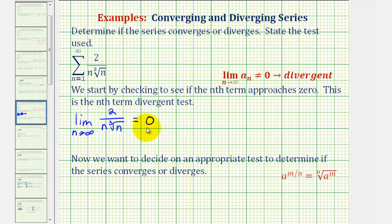When this limit is equal to zero, the nth term divergent test doesn't tell us anything. Let's go ahead and state that the nth term divergent test is inconclusive for this series, which means we'll have to apply a different test to determine if this is convergent or divergent.